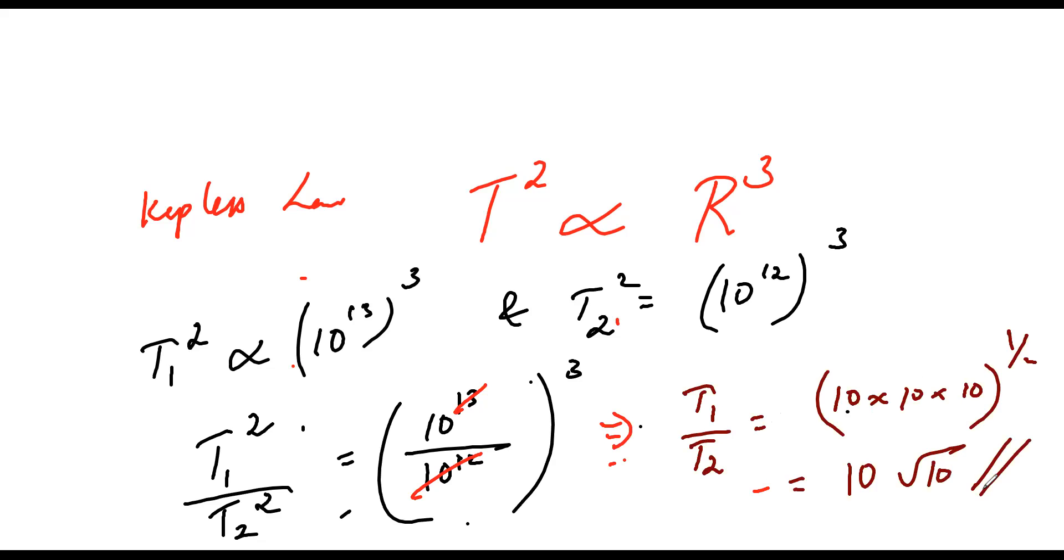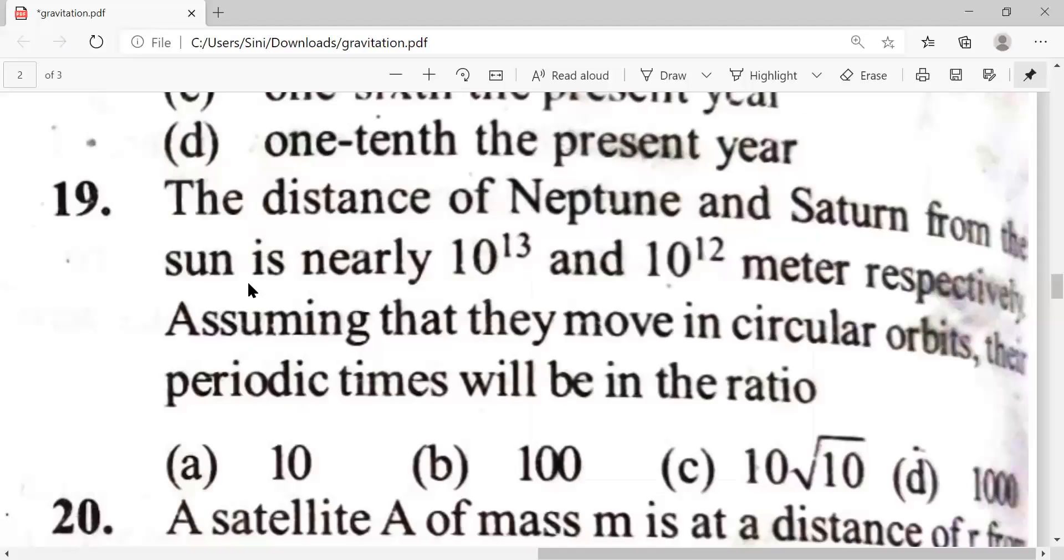So option C is the correct answer. I can simply mark option C, 10 into root 10, as the answer. Thank you.